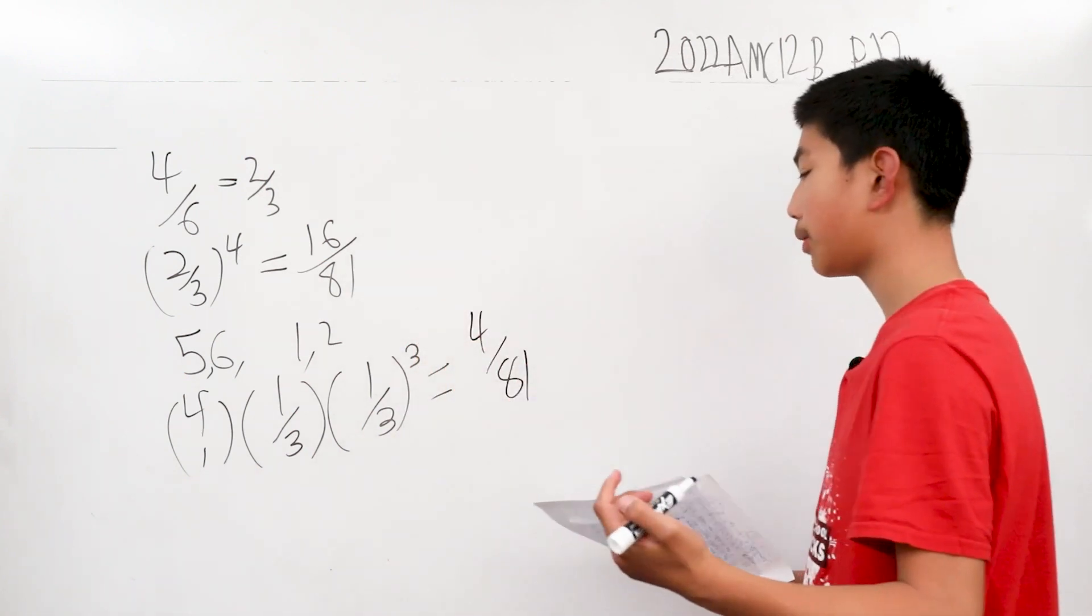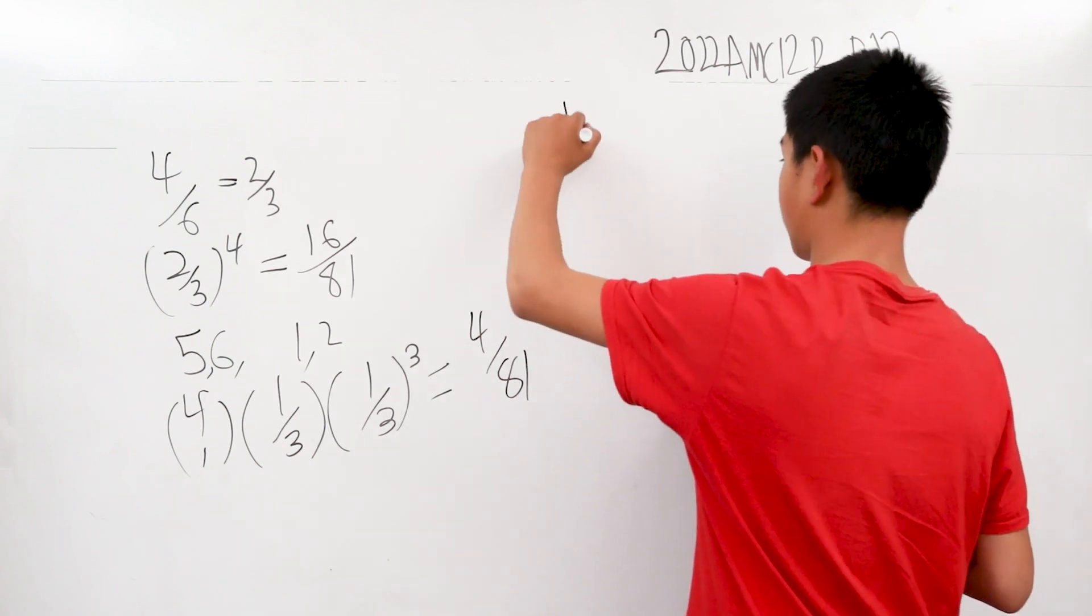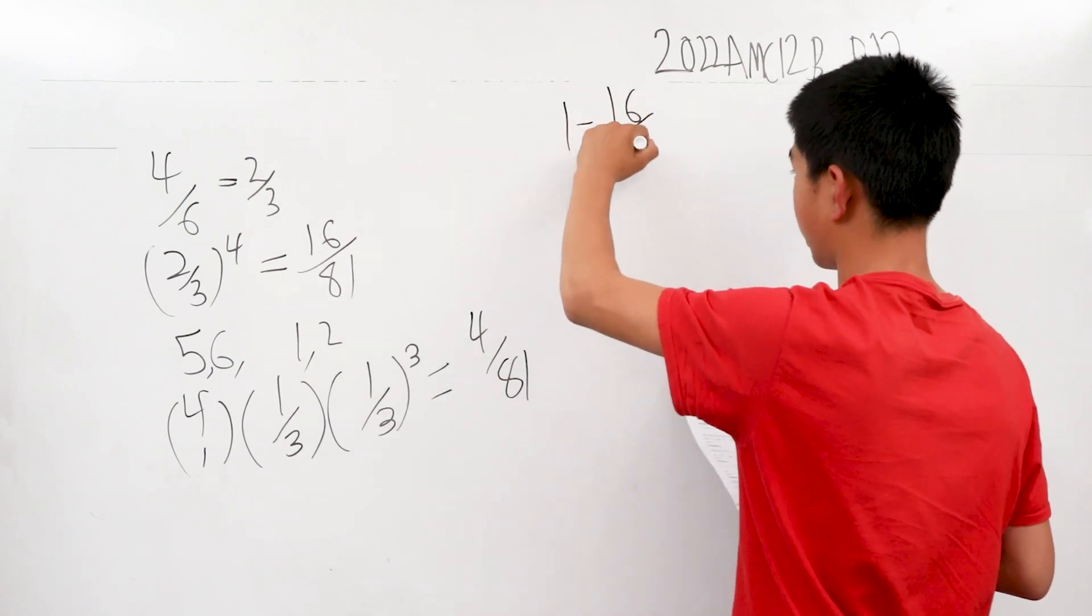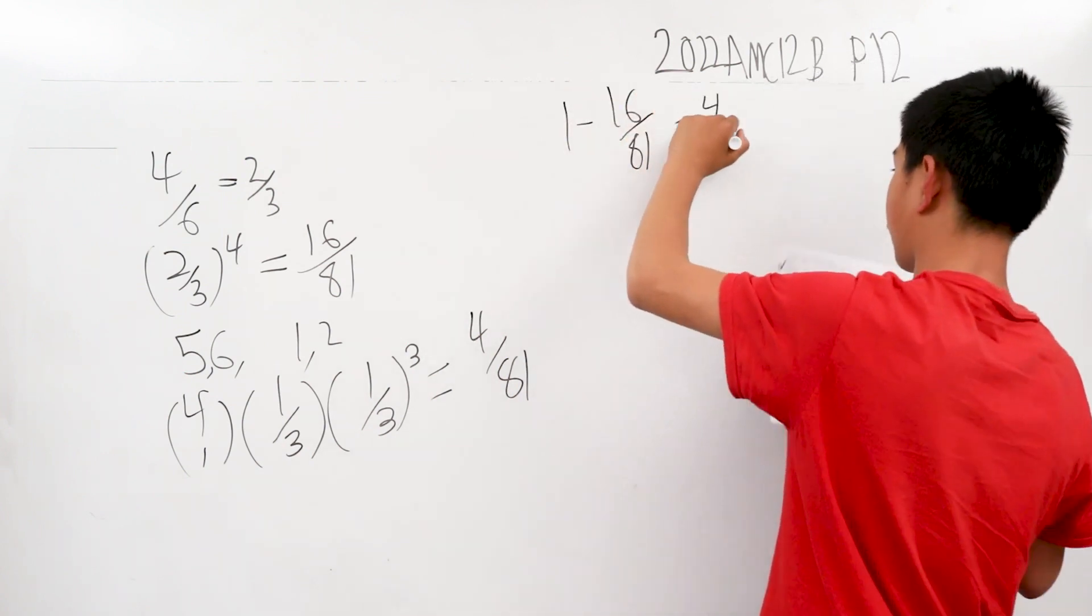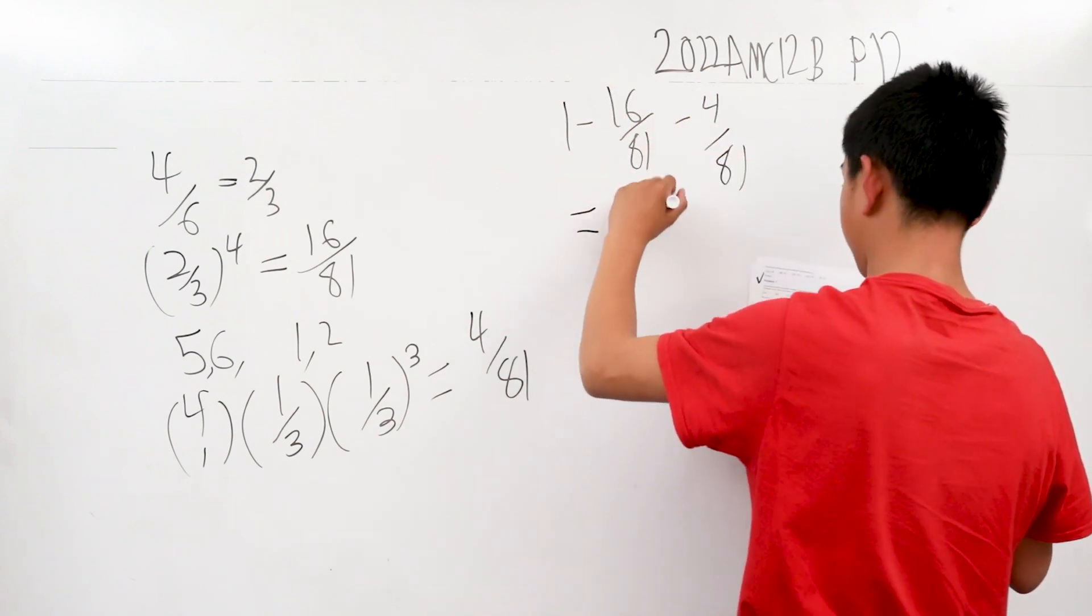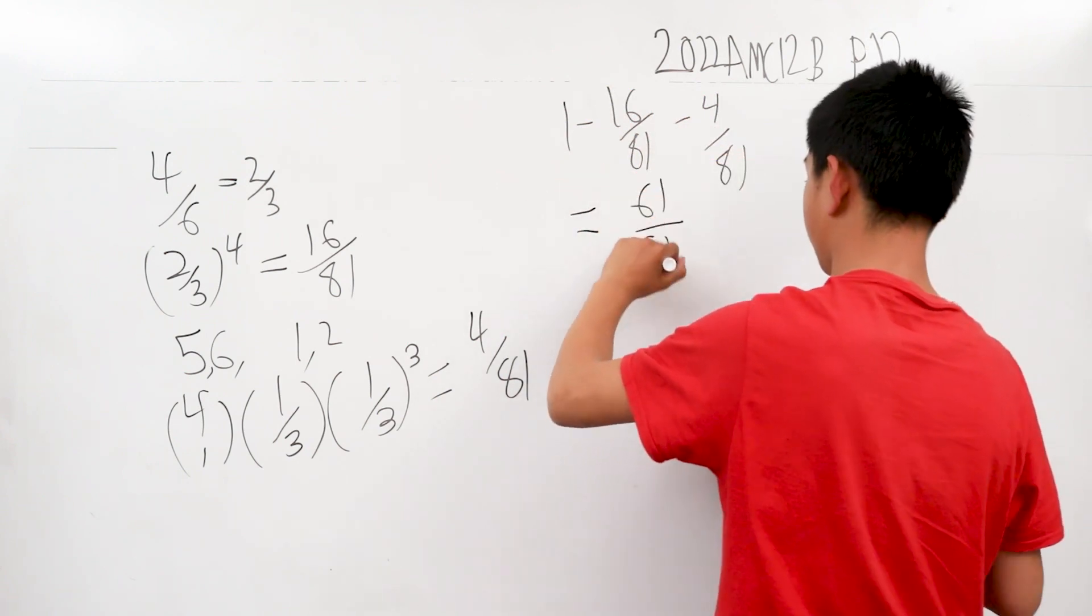Since we used complementary counting, we do one minus 16 over 81 minus four over 81, which gives us our answer of 61 over 81.